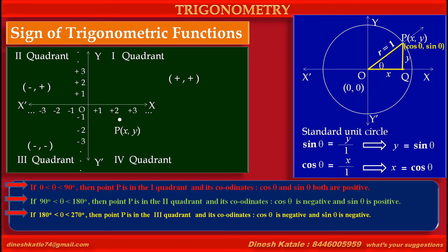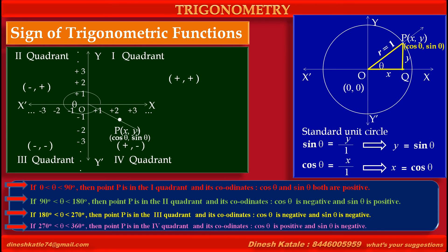Now, let point P with coordinates (x, y) be any point in the fourth quadrant. Ray OP forms an angle theta with the positive direction of the x-axis. The polar coordinates of point P are (cos theta, sin theta). For any point in the fourth quadrant, the x-coordinate is positive and the y-coordinate is negative. Therefore, cos theta is positive and sin theta is negative in the fourth quadrant. Thus, if theta is greater than 270 and less than 360, then point P is in the fourth quadrant, cos theta is positive and sin theta is negative.